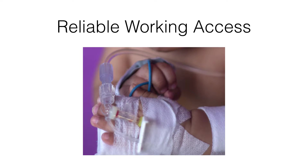Moving on to vascular access: you need reliable working vascular access to give intubation medications. You don't want to discover your access has stopped working when your child has a bradycardia and you need to give atropine. Flush it and make sure it's working before you proceed. If you don't have good access, remember that intraosseous access is easy to insert and is generally better than peripheral access for getting drugs into the central circulation.